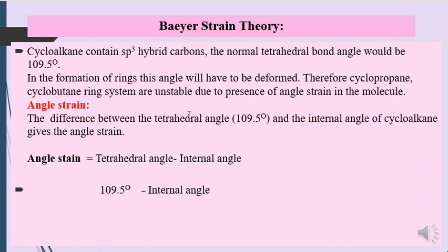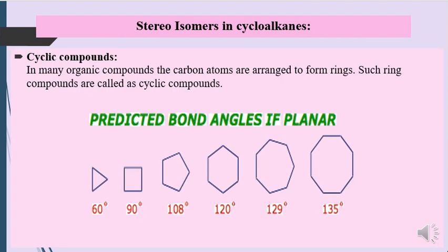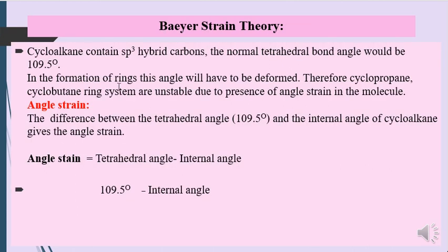According to Baeyer strain theory, which explains the stability of cycloalkanes, cyclohexane contains sp3 hybridized carbons. For sp3 hybridization, the normal bond angle is 109.5°. In the formation of a ring, this angle has to be deformed because the dihedral angle is 60°, 90°, or 108° depending on ring size.